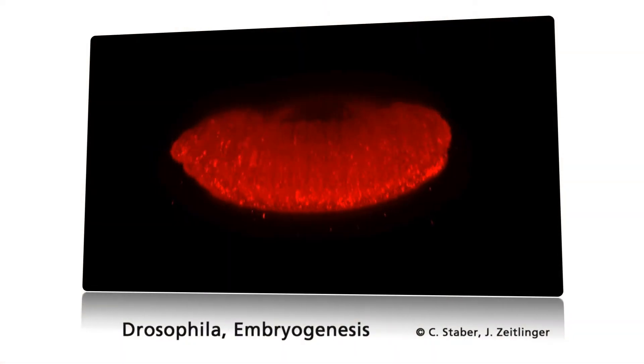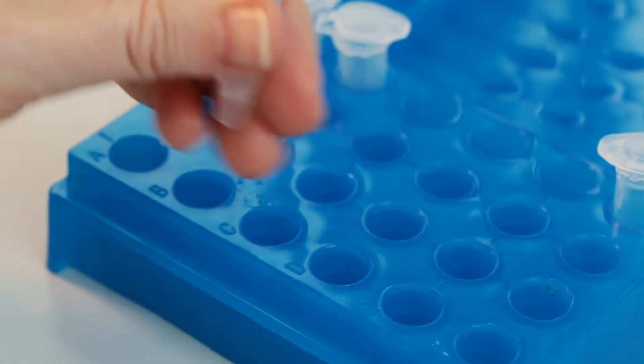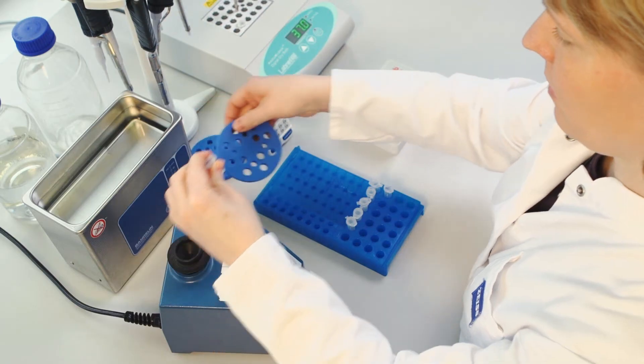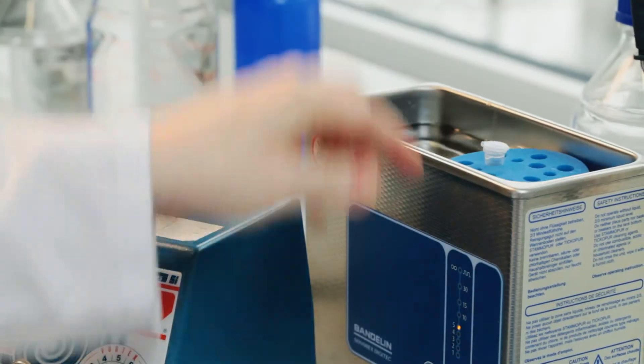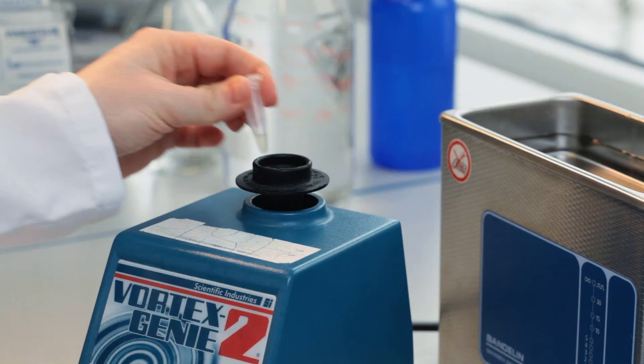Fluorescent beads will serve as fiducials for later multi-view alignment. Simply mix them with the medium by repeatedly vortexing and sonicating. Then add them to the agarose and vortex again.